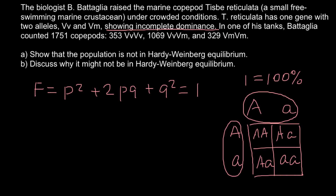Where we have two dominant alleles — capital A capital A — we have plants with red flowers. Two out of four would have the same genotype as the parental genotype and produce an intermediate phenotype between red and white, so they'll be pink. And one quarter of the plants would have white flowers. With incomplete dominance, we can easily tell homozygous dominant, heterozygous, and homozygous recessive apart because all three genotypes produce three distinct phenotypes — genotype equals phenotype.